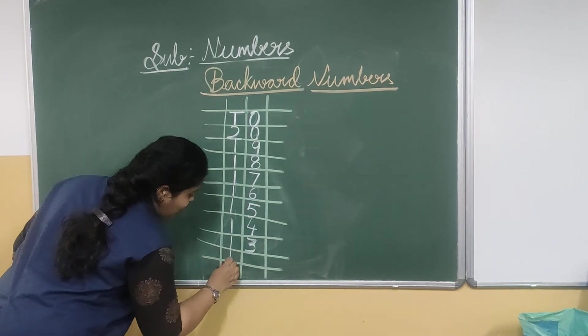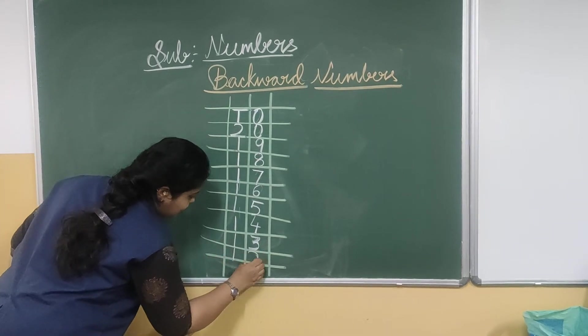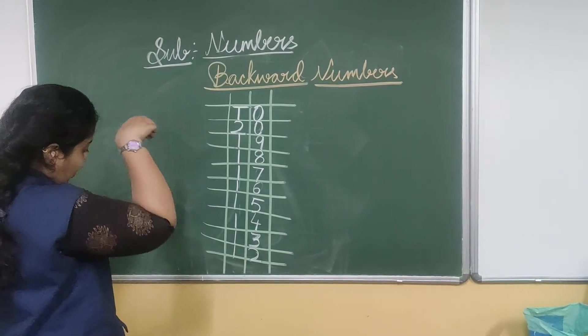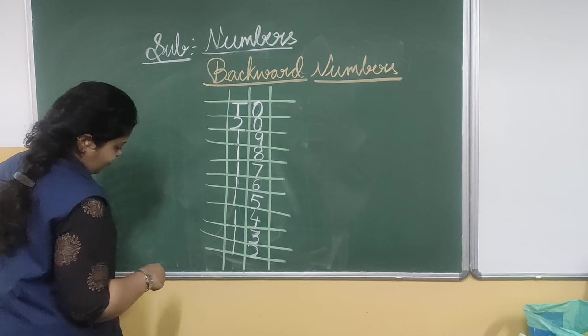Write 1 under the 10's place. And 3 before it is 2. That is 1, 2 — 12. So 13 before is 12.